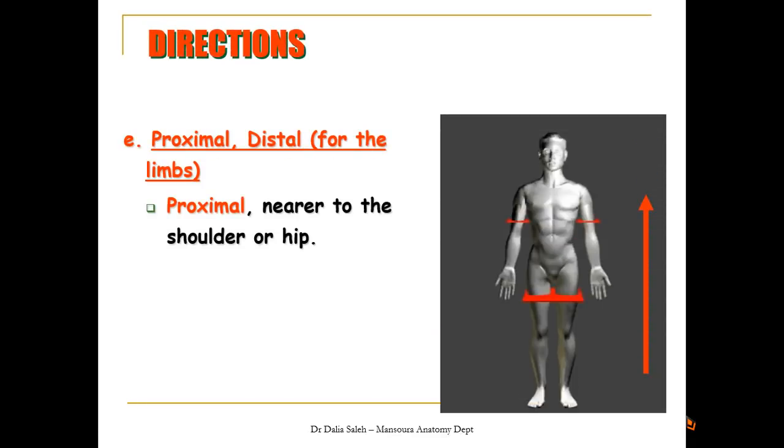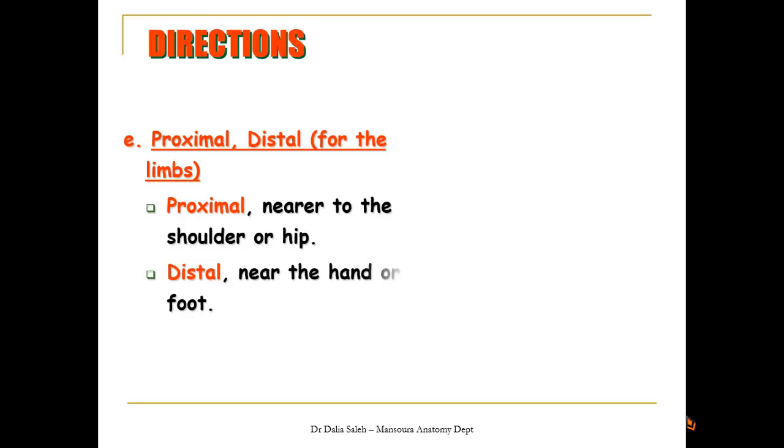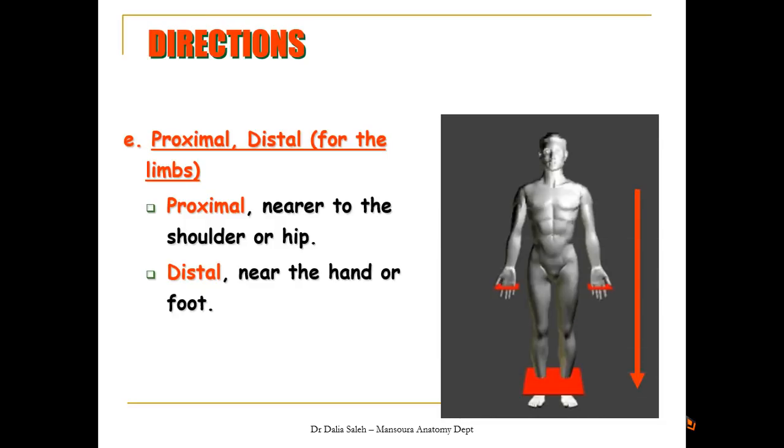We also have proximal, and opposite to it is the word distal. Proximal and distal usually refers to the limbs, so proximal means towards the shoulder or the hip joint. The point where the limbs are attached to the core or to the trunk, so we have the upper limbs attached to the core through the shoulder, and the lower limbs attached to the core or to the trunk by the hip joint, so any point to the hip joint we call it proximal, while any point away from the shoulder or from the hip joint we call it distal. So, you have the elbow joint is proximal to the wrist joint, while in the same time, the elbow joint is distal to the shoulder joint, and so on.